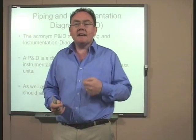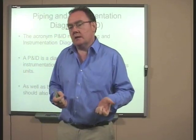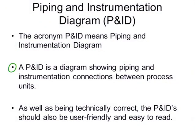The acronym P&ID means piping and instrumentation diagram. Essentially, the P&ID is a diagram showing piping and instrumentation connections between process units. These process units are generally equipment items such as tanks, pumps, heat exchangers, in-process flow filters, etc. We're showing the piping connectivity and the instrumentation connections between those process equipment units.